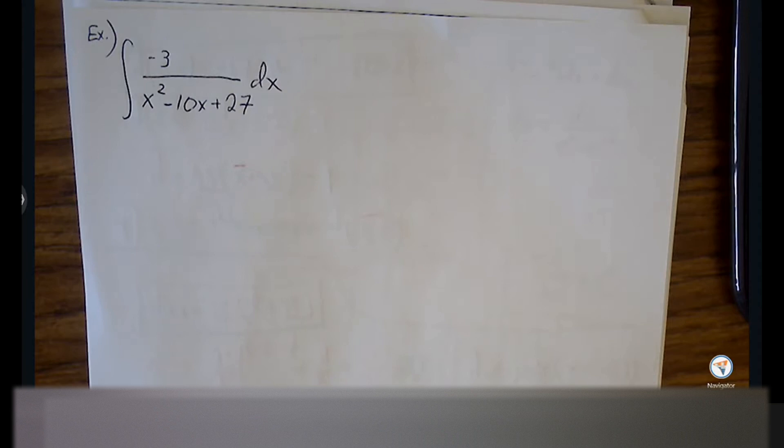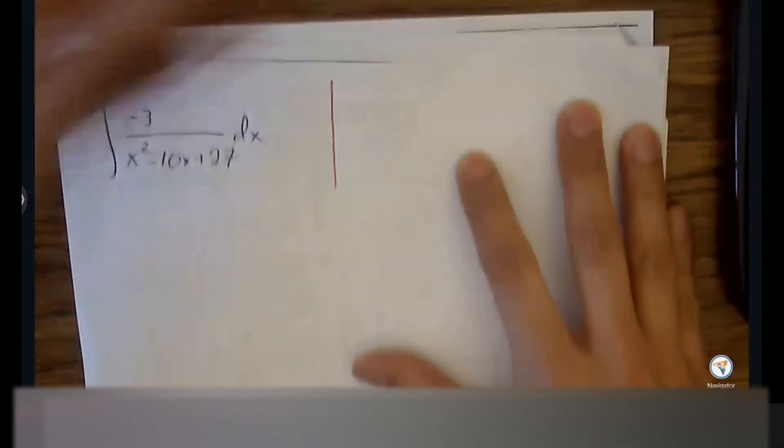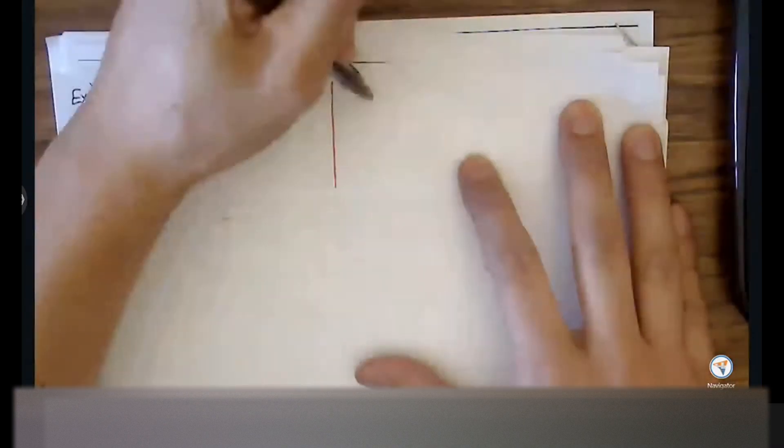We want the denominator to be higher than the numerator by two or more degrees. Between the three arc trig options, which is the best fit? Arc tangent — because there's no square root. No square root means the only option left must be arc tangent. I'll put the arc tangent rule next to it so we have easy access. It will be on your formula sheet as well.